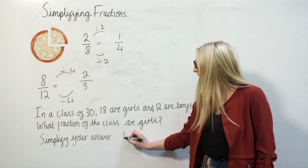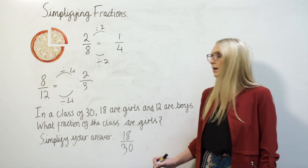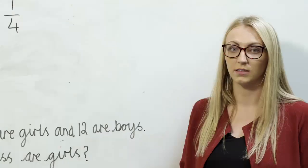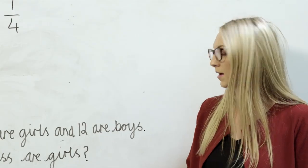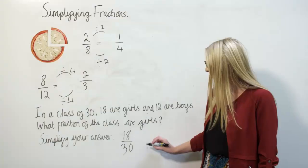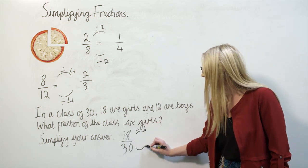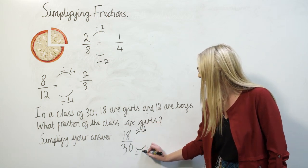I can see that 18 out of 30 are girls, so 18 thirtieths are girls, and I want to simplify my answer. To do that, I'm going to find the highest common factor of 18 and 30, which is 6, and I'm going to divide both the numerator and the denominator by 6.